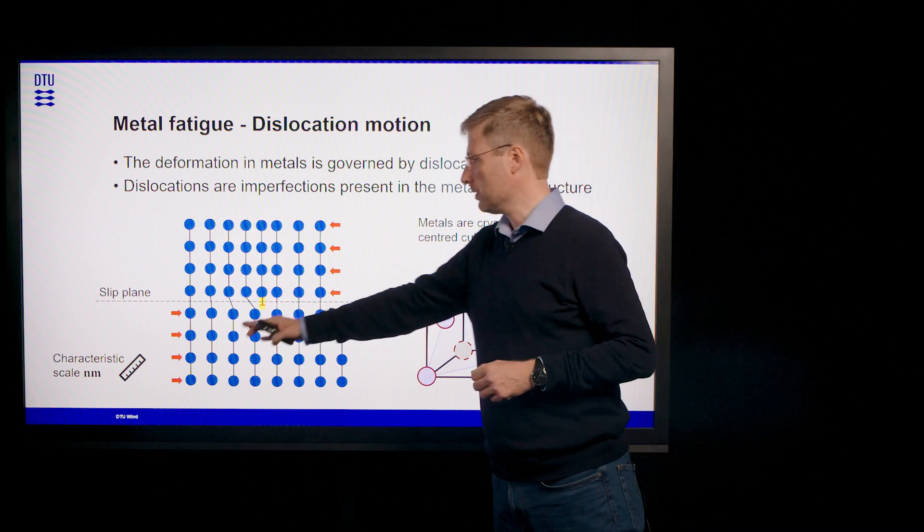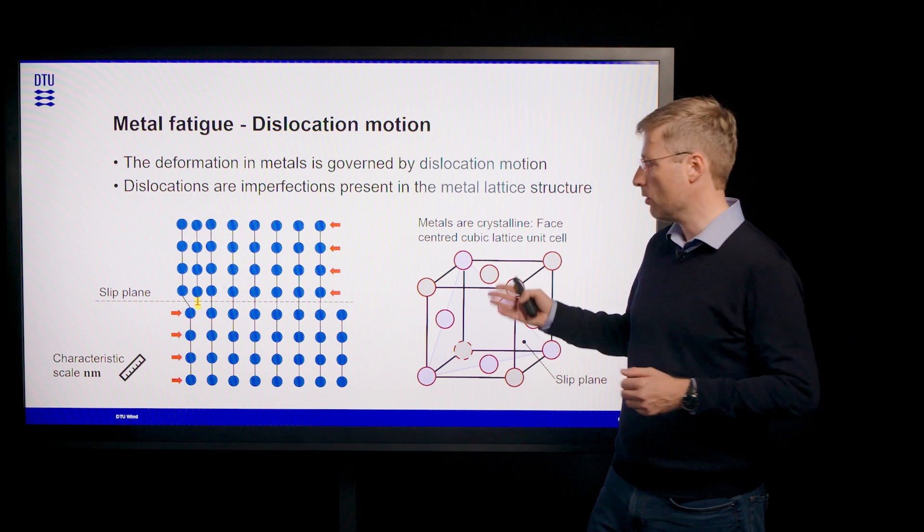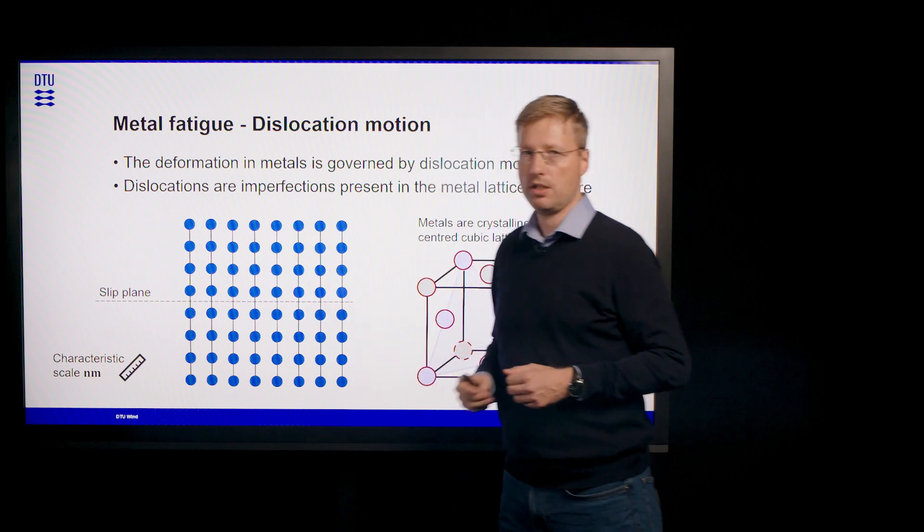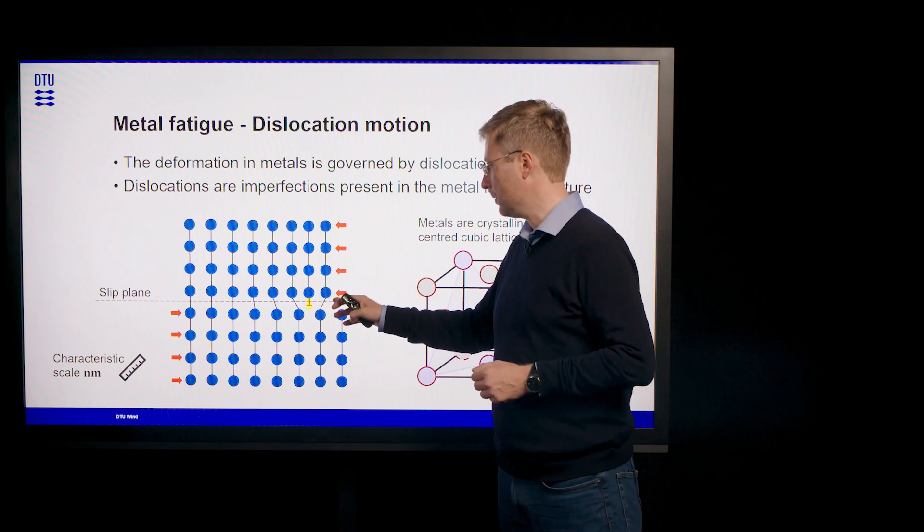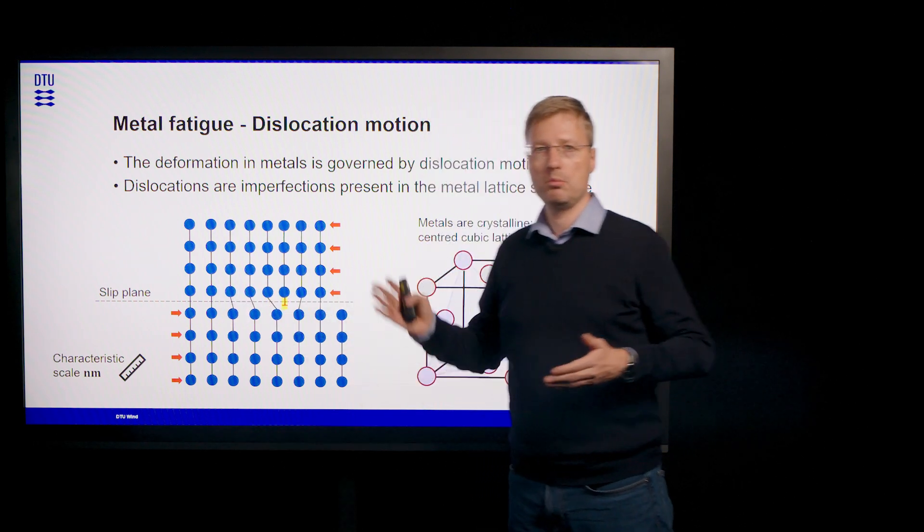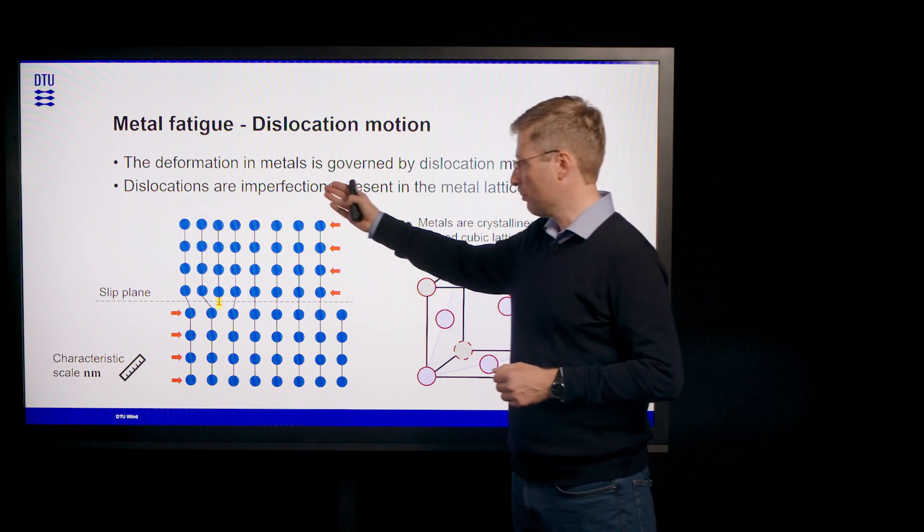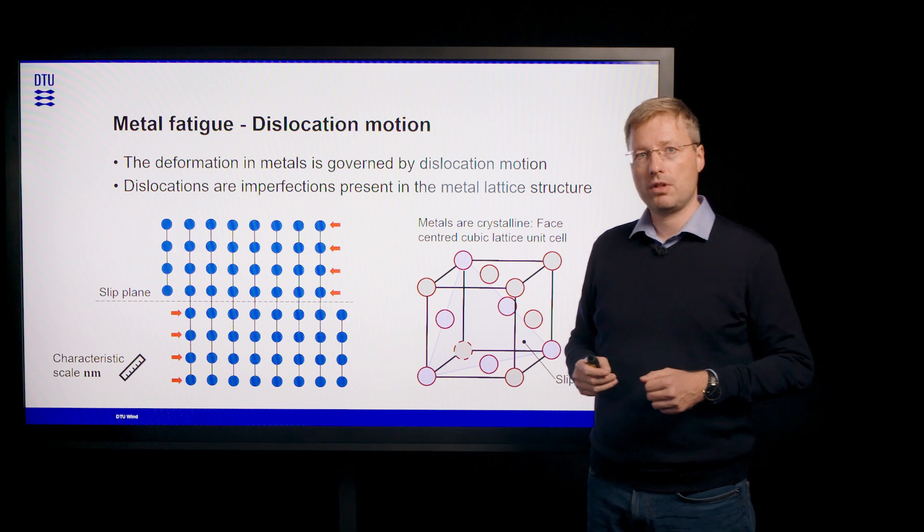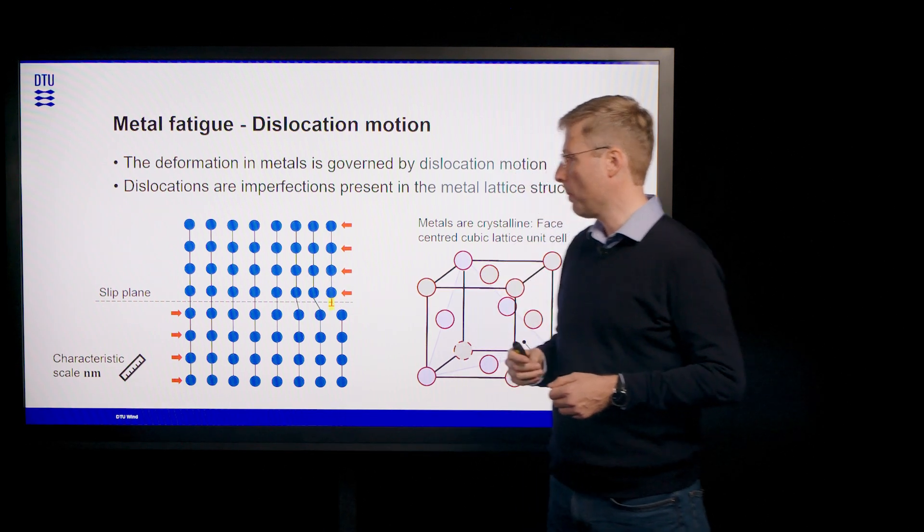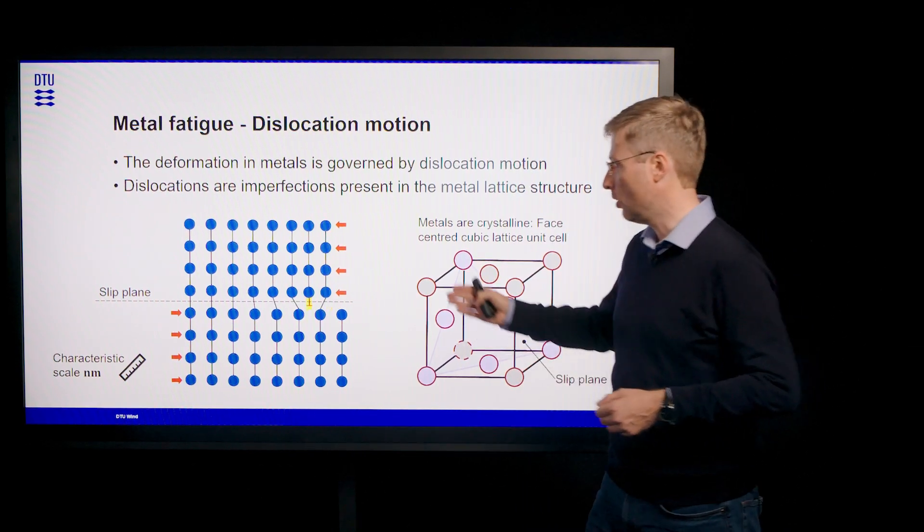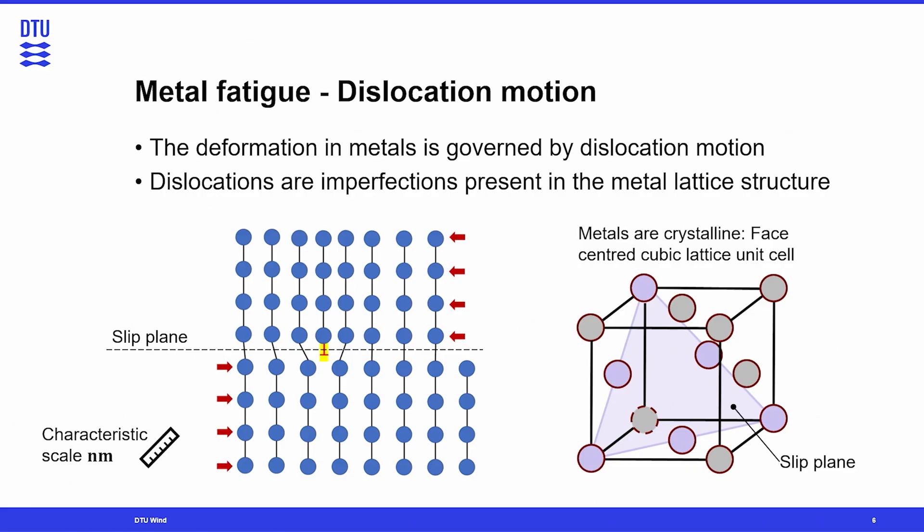Now if we apply a shear stress to a stack of atoms, we can ask ourselves how can we move this part relative to that part when we apply that stress? And the obvious answer would be maybe we want to sever all the atomic bonds here and move everything at once. But this is not how nature works. Rather we will have some local defects in the lattice structure which we call dislocations. And it is those dislocations that move step by step through the lattice along the slip plane. So we can say that the deformation behavior of metals is dislocation driven.